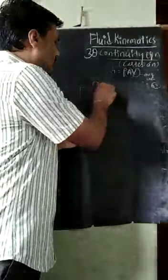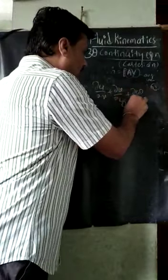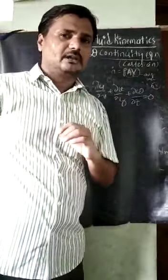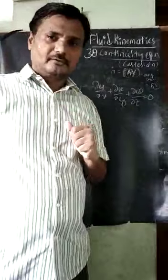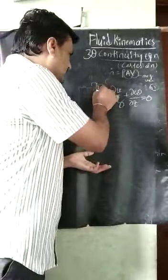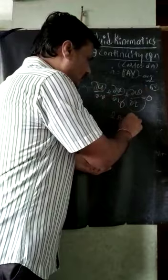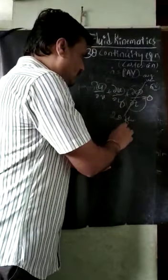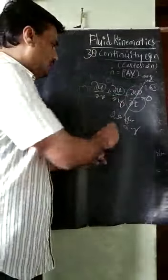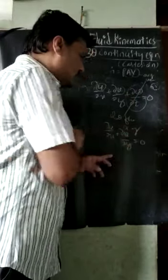So the equation is: ∂u/∂x + ∂v/∂y + ∂w/∂z = 0. In case of numericals, they will give equations for u and v for 2D flow. For 2D flow in x and y, ∂w/∂z becomes 0, and the equation becomes ∂u/∂x + ∂v/∂y = 0.